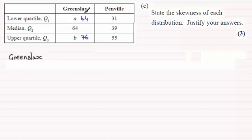So first of all I'm going to look at Greenlax and what we do is we compare the difference between the quartiles, that is Q2 minus Q1. And we also compare that with Q3 minus Q2. When we do Q2 minus Q1 for Greenlax, 64 minus 44, we end up with 20. And for Q3 minus Q2, 76 minus 64, we get 12. So what does this mean?